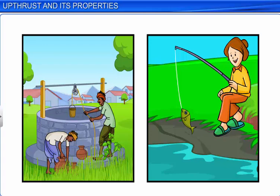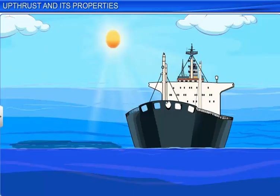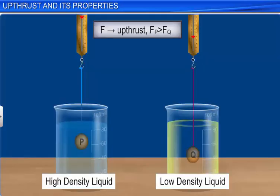Let's look at the properties of upthrust. The larger the volume of the body submerged in liquid, the greater is the upthrust. The more the density of the liquid, the greater is the upthrust.